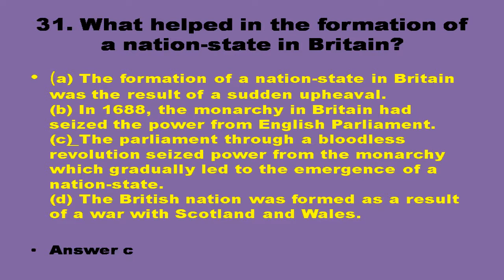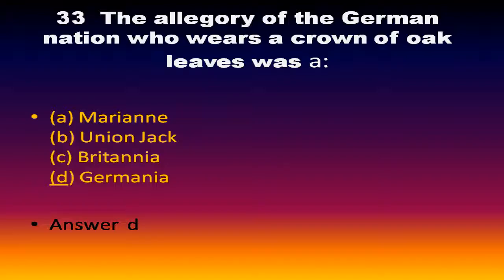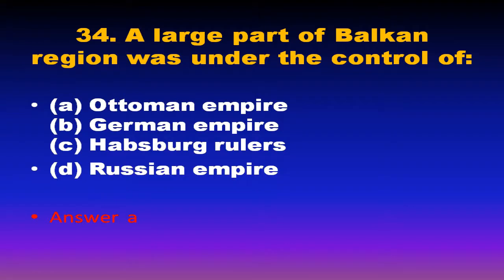Next question: Who was responsible for the unification of Germany? Otto von Bismarck. Next question: The allegory of the German nation who wears a crown of oak leaves was Germania. Last question: A large part of the Balkan region was under the control of — the answer is the Ottoman Empire.